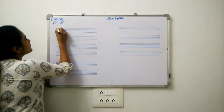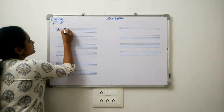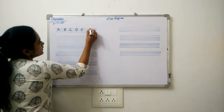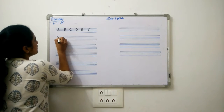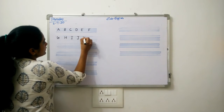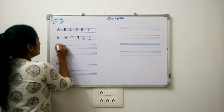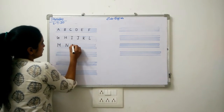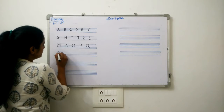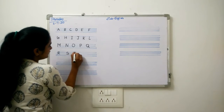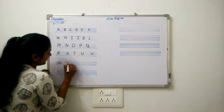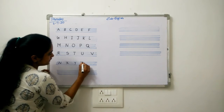Start with me. A, B, C, D, E, F, G, H, I, J, K, L, M, N, O, P, Q, R, S, T, U, V, W, X, Y, Z.